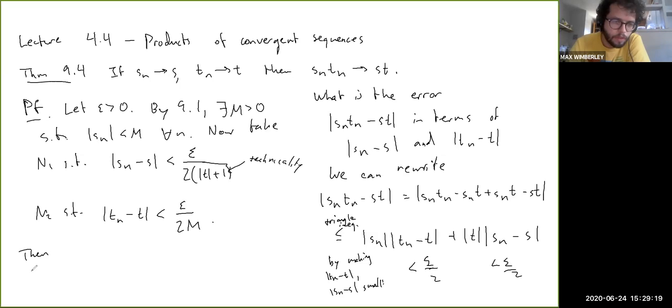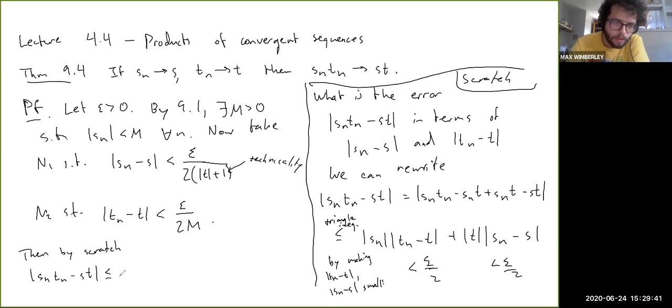So then by this scratch work, we have SN Tn minus ST is less than or equal to SN Tn minus T plus T SN minus S, which is now less than SN times epsilon over 2m plus T times epsilon over 2 absolute value of T plus 1, which is still less than or less than or equal to. So we have, see, absolute value of SN over M, that's less than 1 or less than or equal to 1. So this term is still less than or equal to epsilon over 2. And this term is less than or equal to epsilon over 2 because we have absolute value of T over absolute value of T plus 1, which is also less than 1.